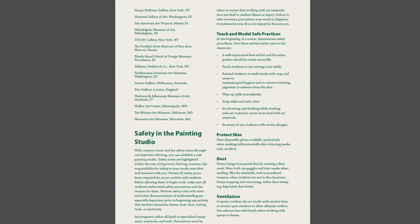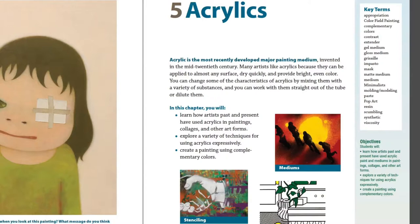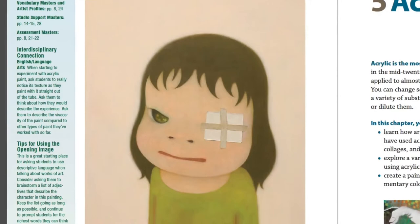Now we will look at Chapter 5 of the teacher edition. As you look at the opening pages, you'll see a tinted panel at the left and right-hand edges. These panels appear on every page of the chapter, offering you resource suggestions, chapter objectives, background information, and teaching tips.